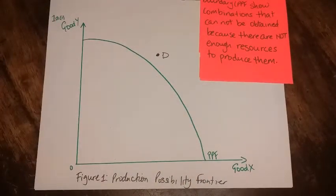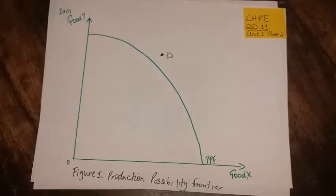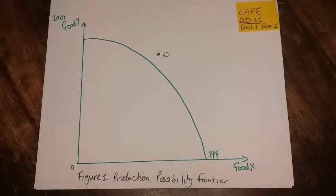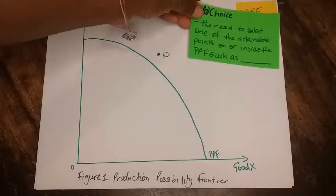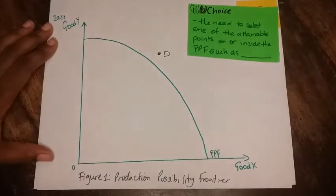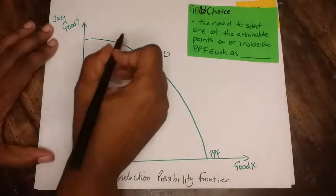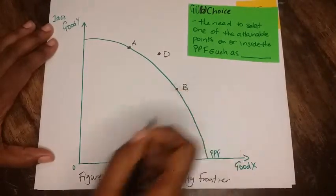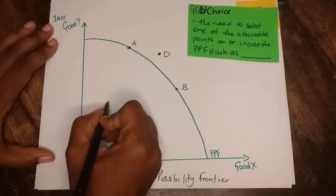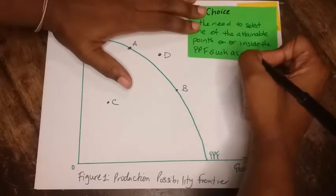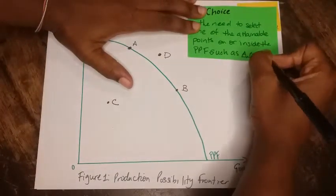Once you put that explanation and link it to a point in your diagram such as D (you could give it any letter but make reference to it), you will get the three marks. For part B, when we are looking at choice, these are all the attainable points which are on the PPF or inside the PPF. So we can call such a point A, another point B, and we can also say a point in here such as C.